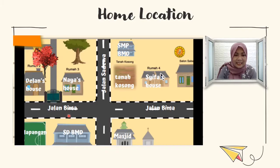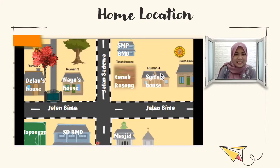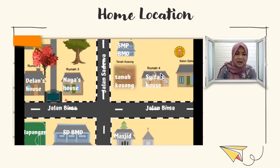Anak-anak, lihatlah jalan di sini. Ada beberapa nama jalan — dua ya. Yang pertama jalan Bima, karena ini masih dalam satu jalan, satu garis begini, ini adalah namanya jalan Bima. Kemudian yang ke atas adalah jalan Sadewa — menggunakan nama wayang ya. Di sana ada beberapa rumah: ada Dilan's House atau rumahnya Dilan, Naya's House atau rumah Naya, ada Tanah Kosong, ada Siva's House rumah Siva, ada SMP BMD, ada Masjid, ada SD Budi Mulia II juga, dan ada lapangan.